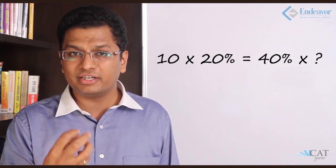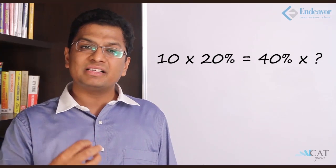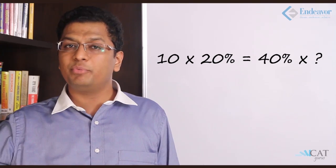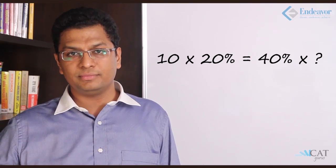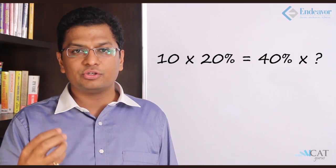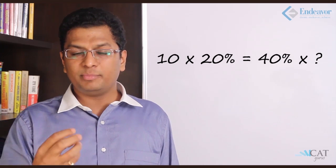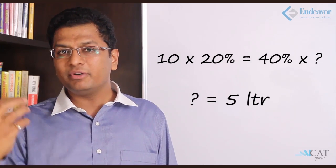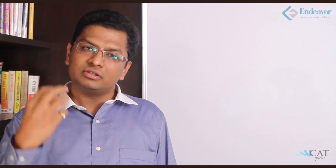Now 40% into what quantity of final solution will give me the same which is 2 liters of pure sugar in the original solution. So 40% into x should give me 2 liters. So 40% of 5 will give me 2 liters. So this is how these kind of questions can also be tackled.